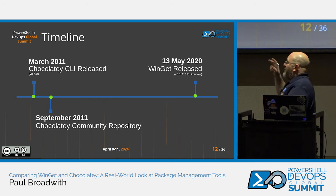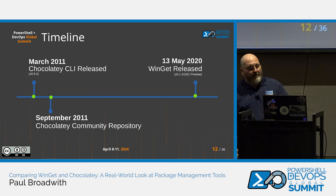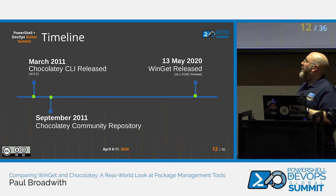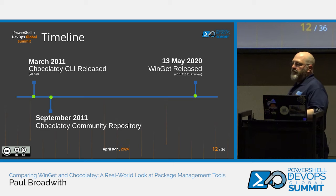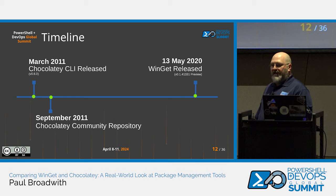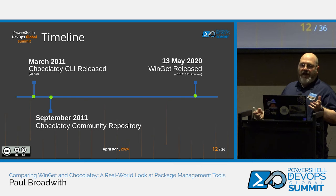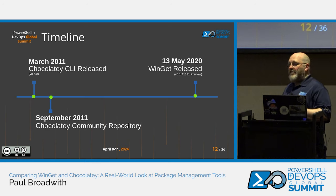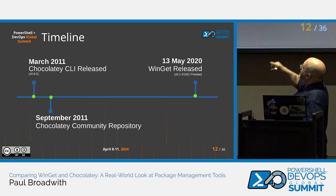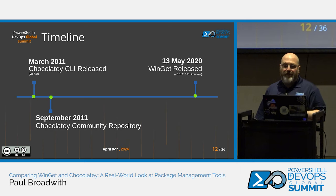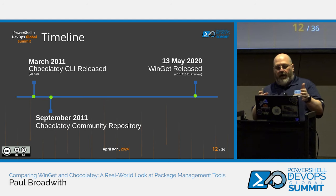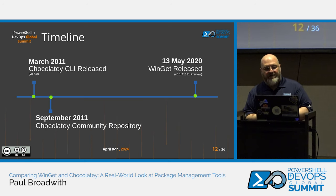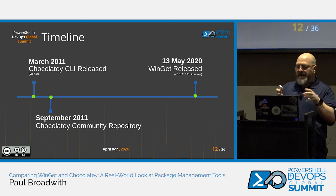A brief timeline of package management on Windows: Chocolatey CLI was released in March 2011 (version 0.6.0), and in September 2011 the Chocolatey Community Repository launched. The first thing to note is that Chocolatey has been around for 13 years — it's not a flash in the pan. WinGet was released in May 2020, so Chocolatey CLI has been around roughly three times as long as WinGet.